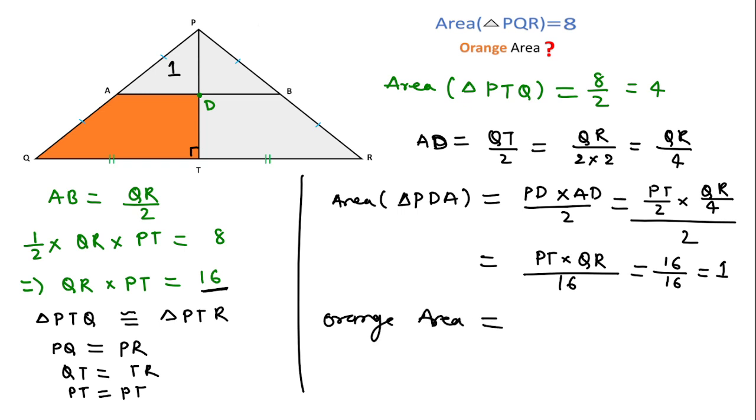Then area of this trapezium, that is orange area, equal to area of this triangle, that is 4, minus area of this triangle PDA, that is 1, which is equal to 3. So area of this trapezium is 3 square units.